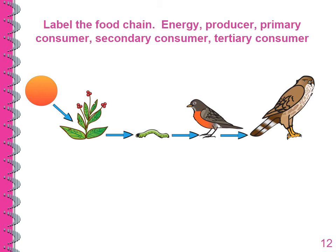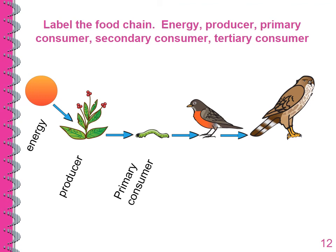Now you are going to identify the parts of a food chain — the energy source, the producer, the primary consumer, the secondary consumer, and the tertiary consumer. The sun is the energy source, and the producer will be the plant. The primary consumer is the worm. The secondary consumer is the bird, which eats the worm. And then we have our tertiary consumer, the big bird.